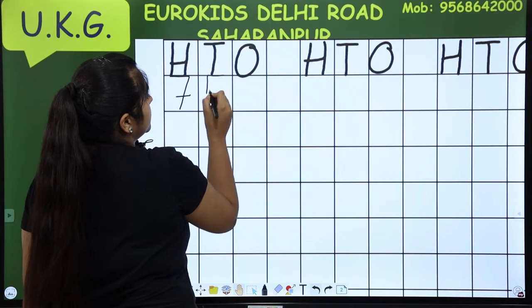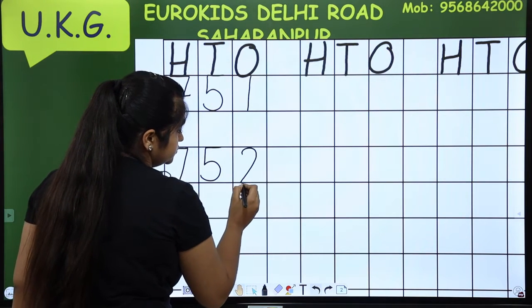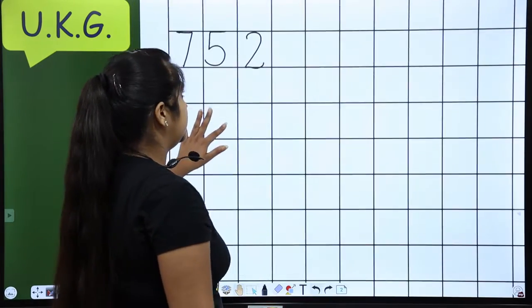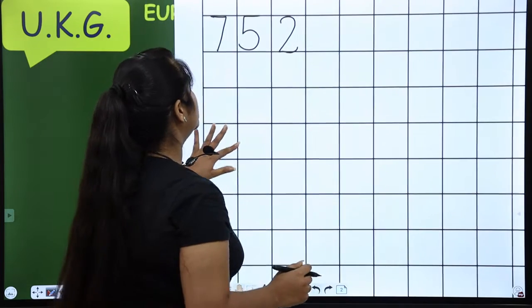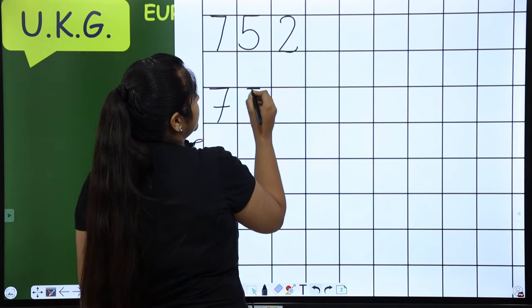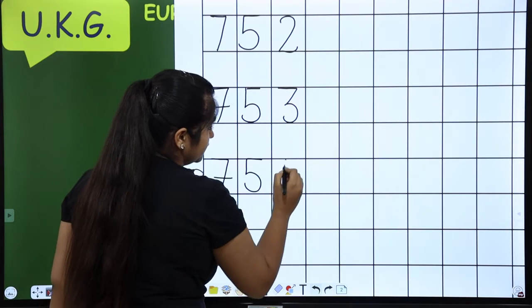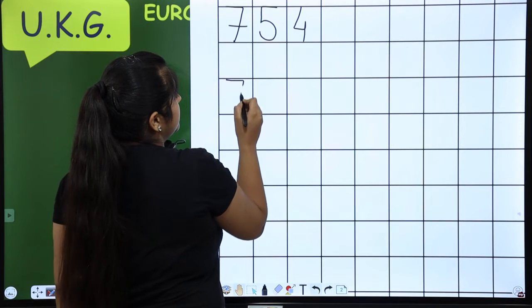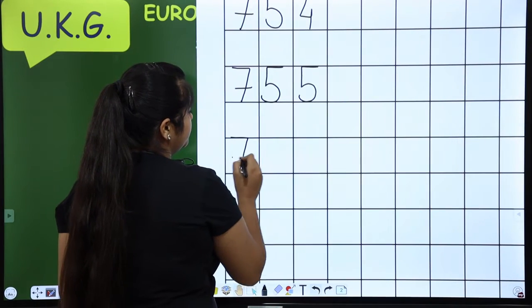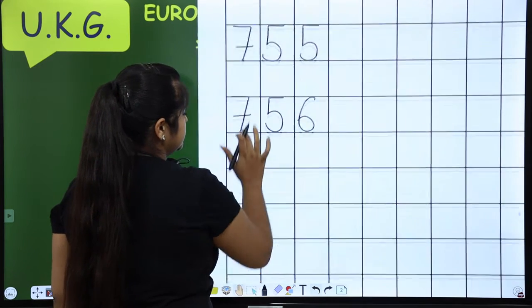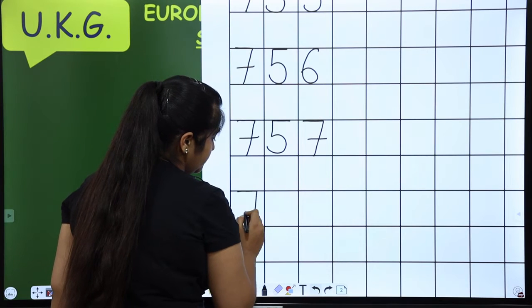Seven hundred fifty-one, 752. Ma'am, ek baar hume phir se yaad karao ki, hume achhi writing me likhna hai, poore block ki lines ko touch kerte hoi likhna hai, okay? So, after 752, what comes? 753, 754, 755, 756, 757, 758.